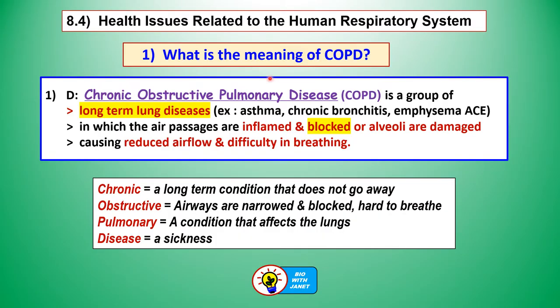What is the meaning of COPD? COPD, or Chronic Obstructive Pulmonary Disease, is a group of long-term lung diseases — for example, asthma, chronic bronchitis, and emphysema, or short form ACE — in which the air passages are inflamed or blocked, or the alveoli are damaged, causing reduced airflow and difficulty in breathing.